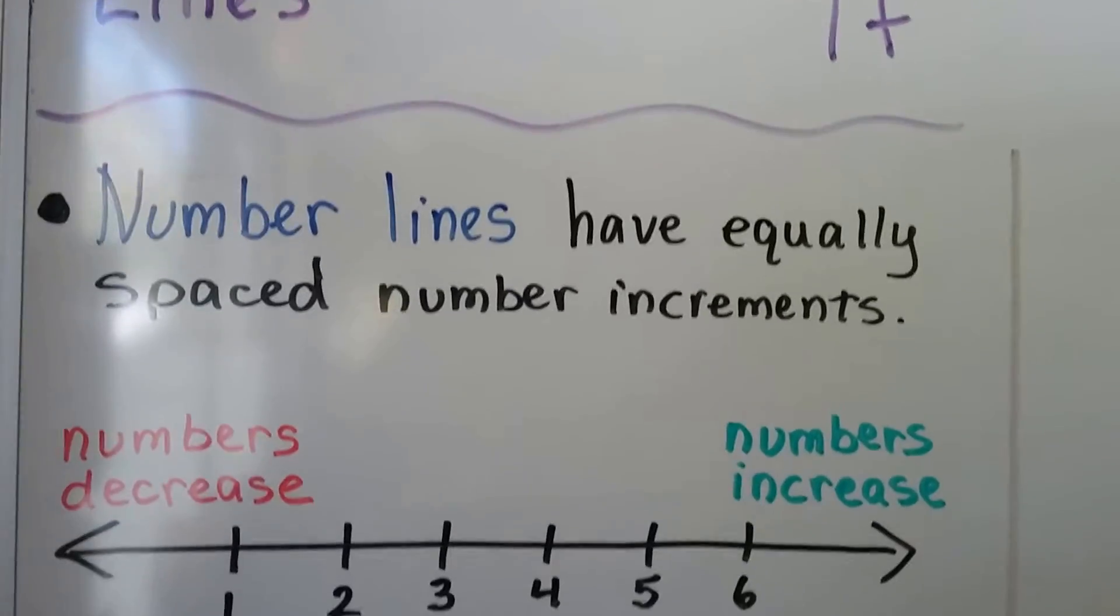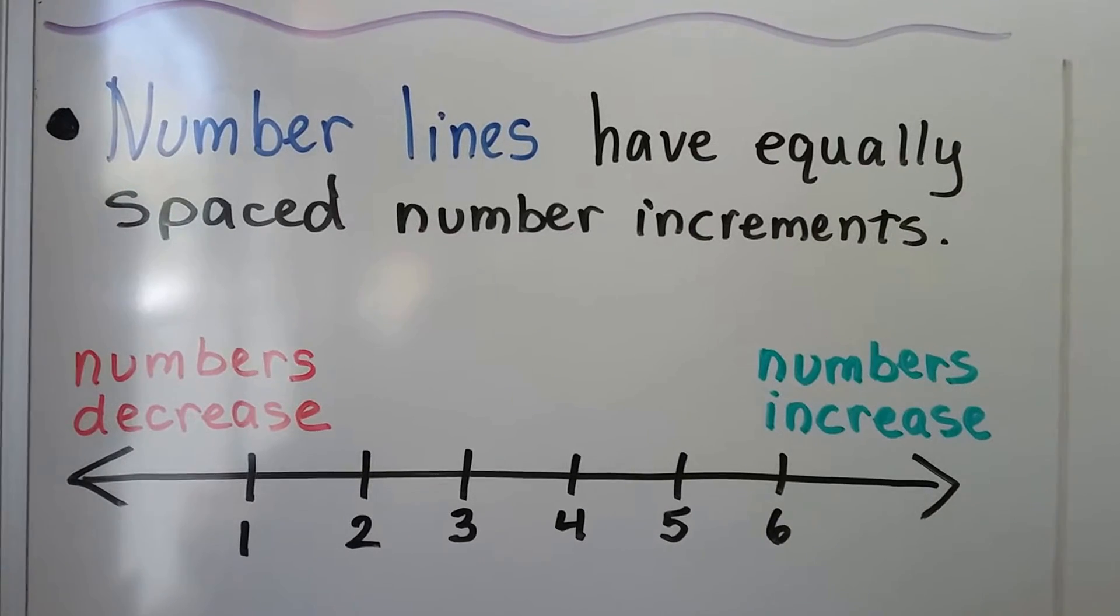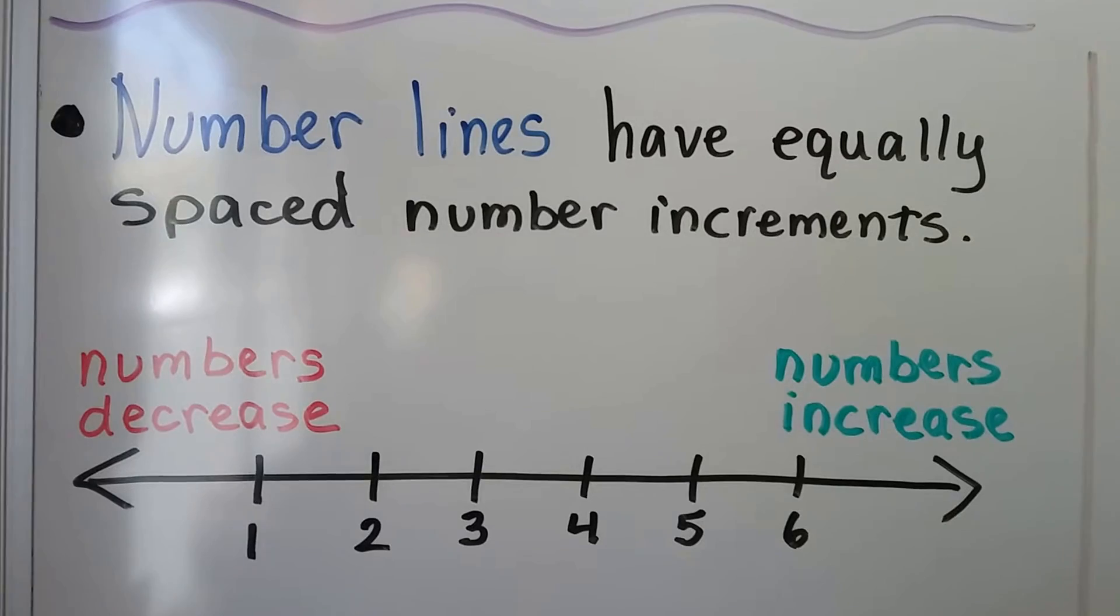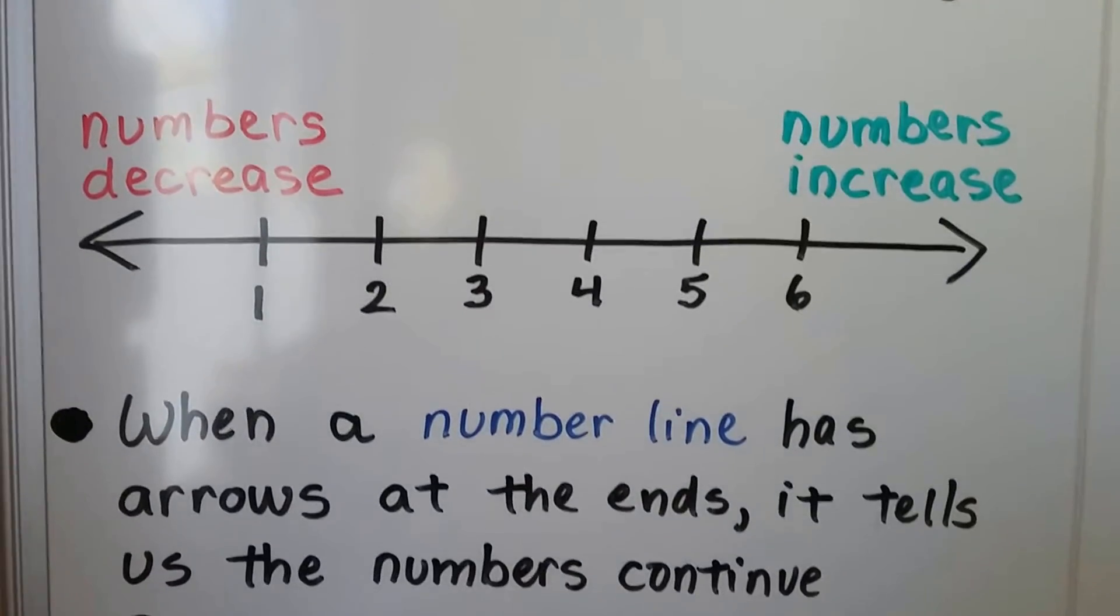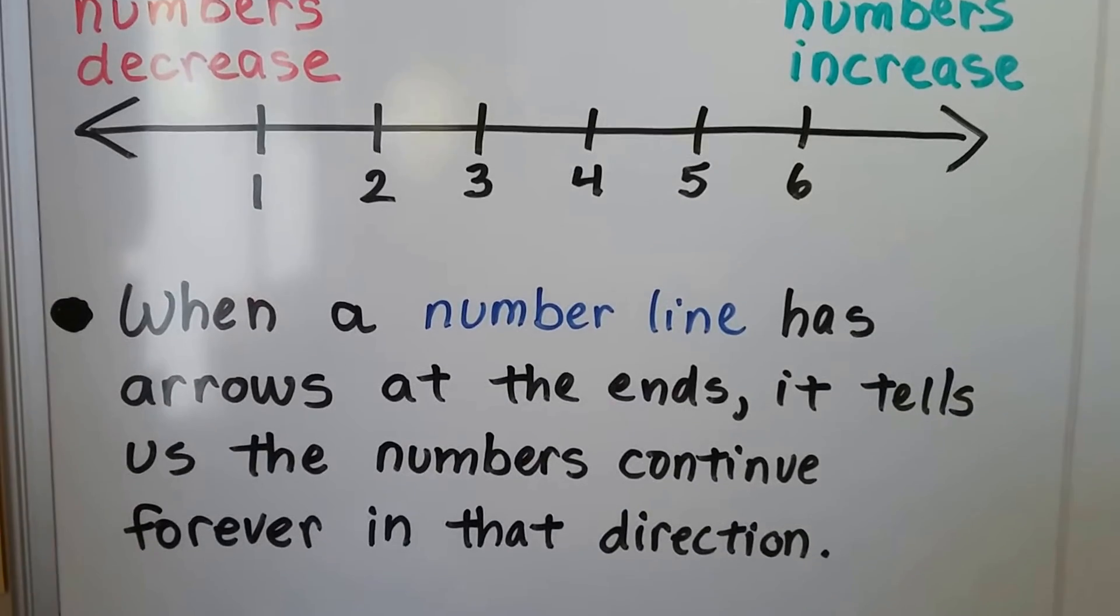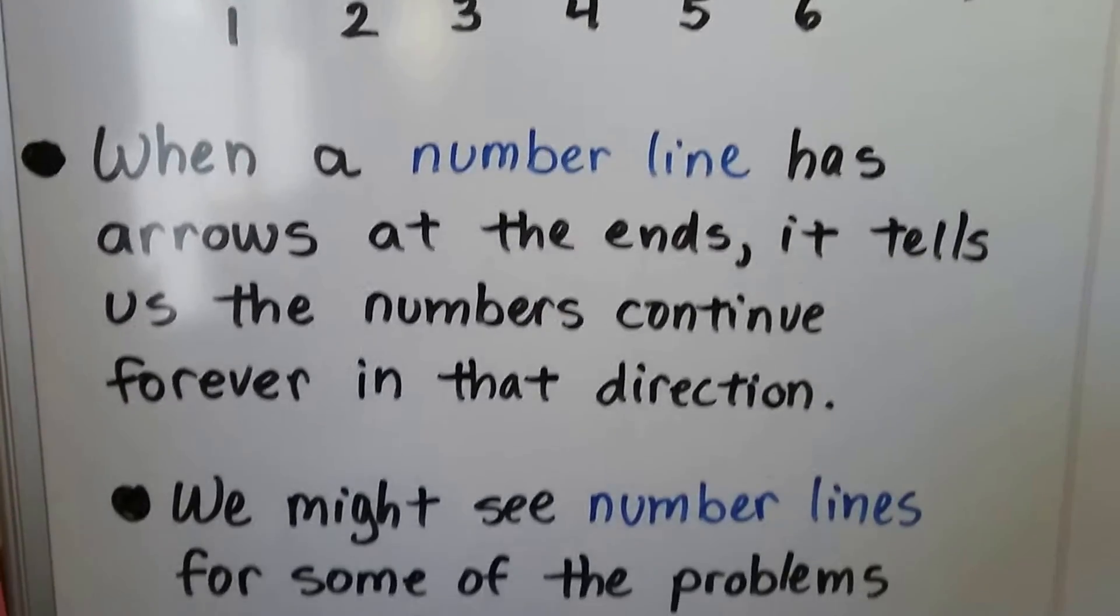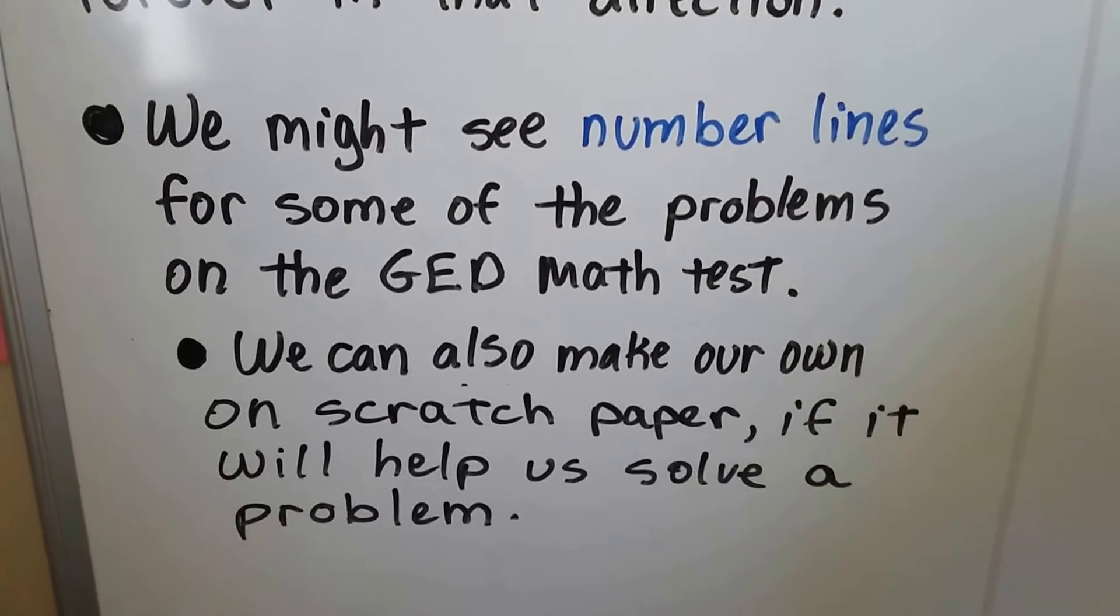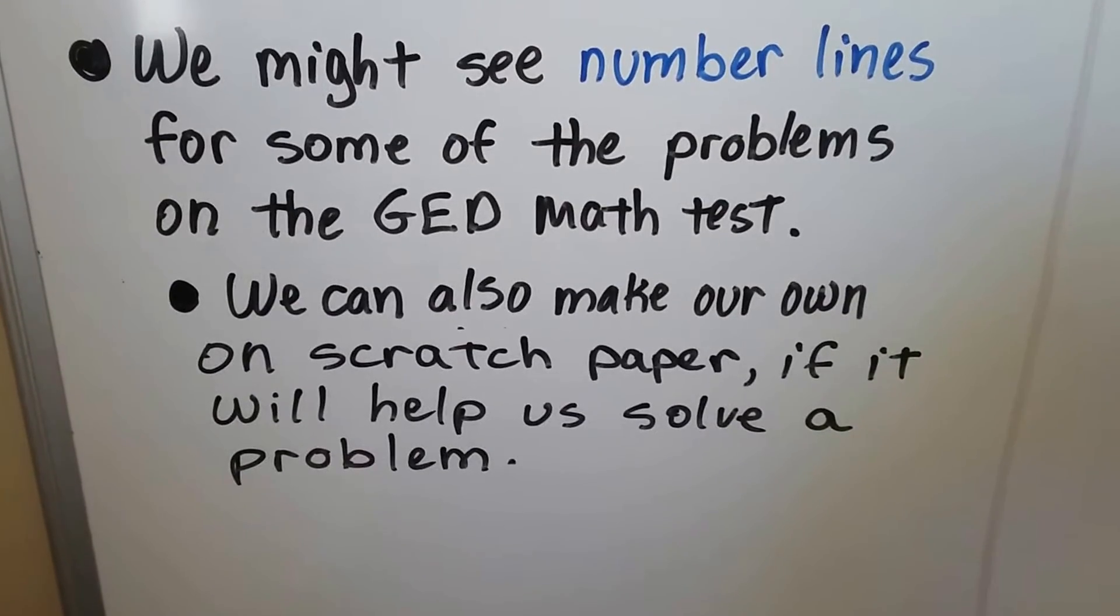Number lines have equally spaced number increments. As it moves to the left the numbers decrease, they get smaller, and as it moves to the right the numbers increase, they get larger. When a number line has arrows at the ends it tells us the numbers continue forever in that direction. We might see number lines for some of the problems on the GED math test. We can also make our own on scratch paper if it'll help us solve a problem.